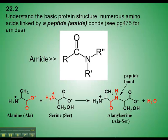The type of bond that holds individual amino acids together is called a peptide bond. Here's alanine and serine joined together at this point, and this is called a peptide bond.